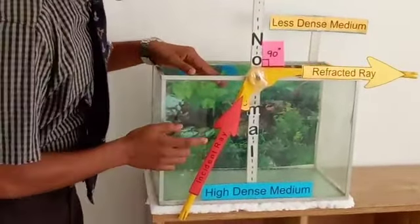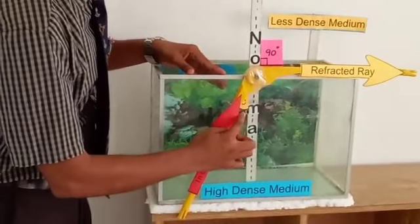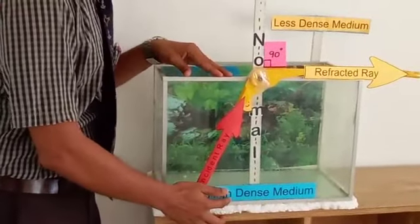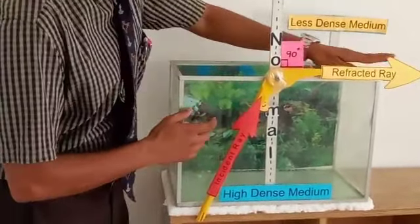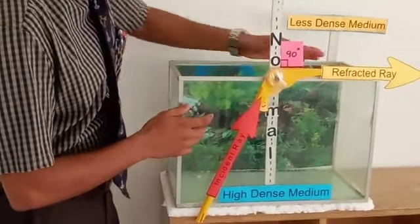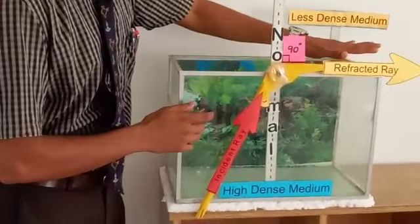In more detail, critical angle is an angle of incidence in a high-density medium, such as glass or water, where the refracted ray is 90 degrees to the less dense medium, which is air.